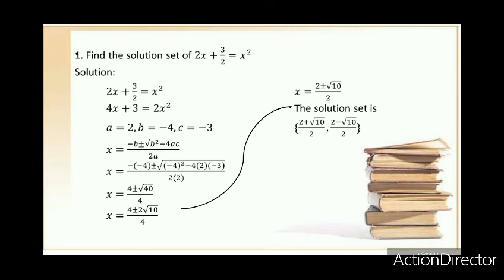Let's substitute the values of a, b, and c into the formula. The result will be negative times negative 4, plus and minus the square root of negative 4 squared minus 4 times 2 times negative 3, all over 2 times 2. This simplifies to x equals 4 plus and minus the square root of 40 over 4.